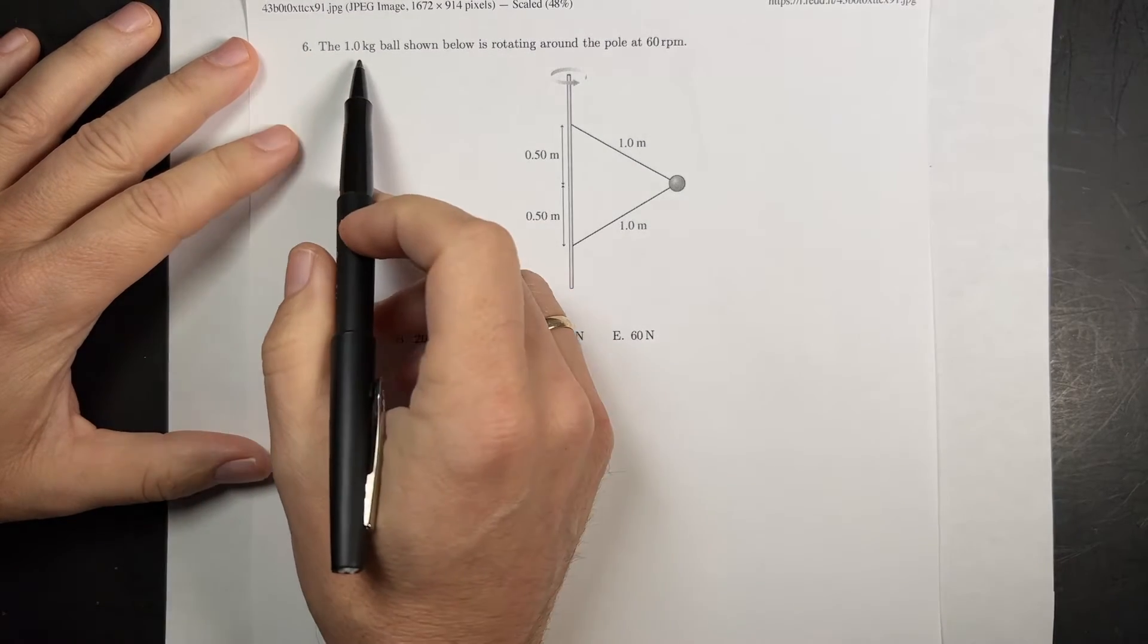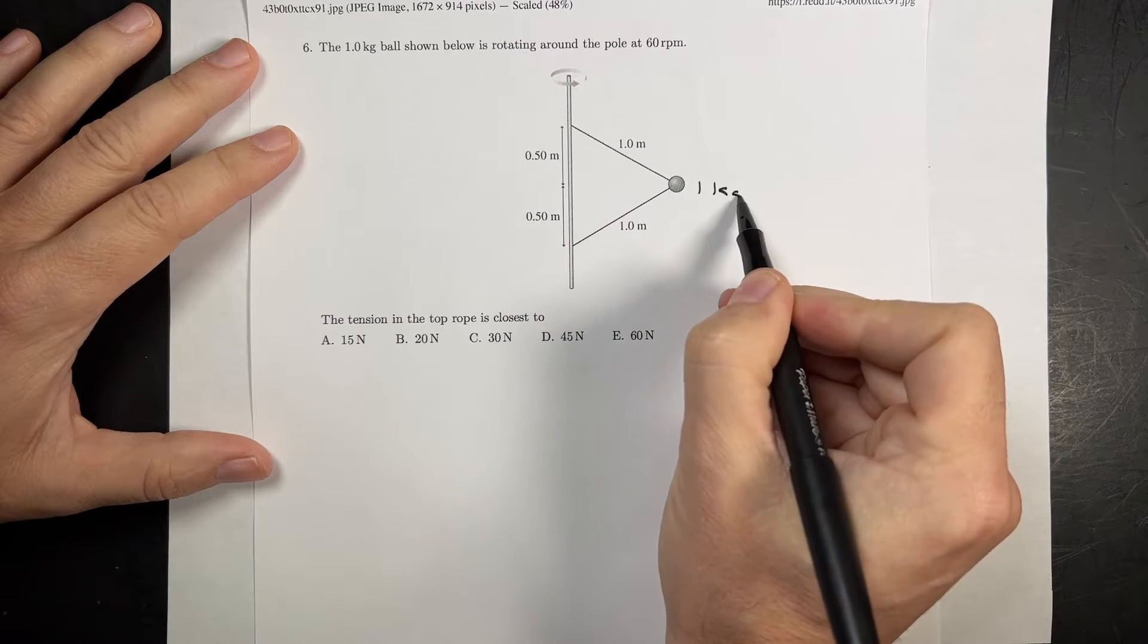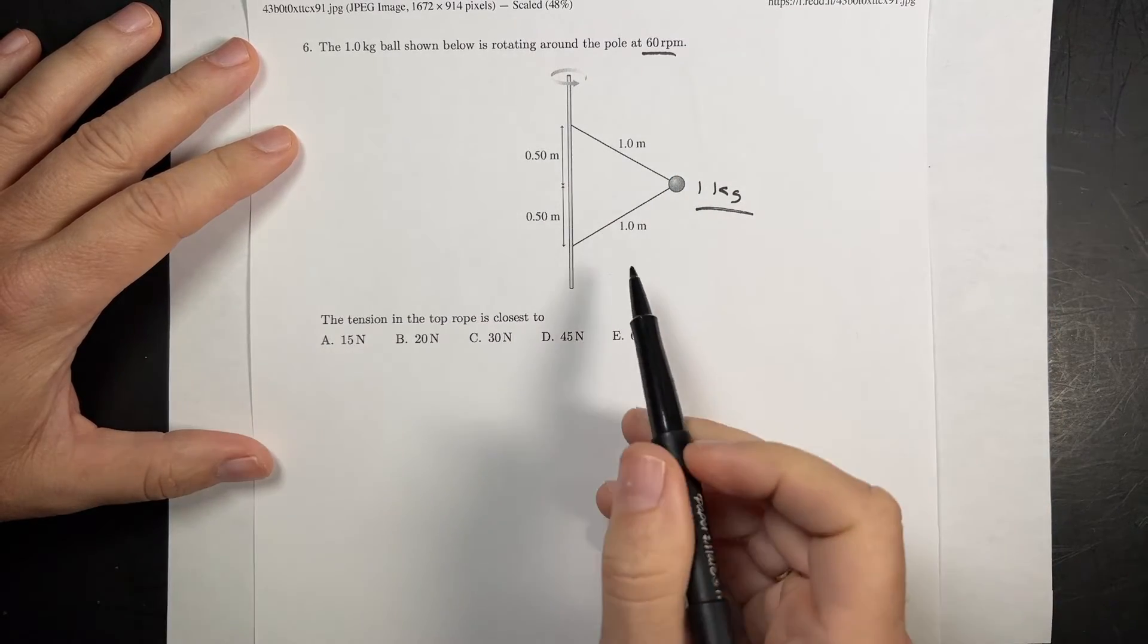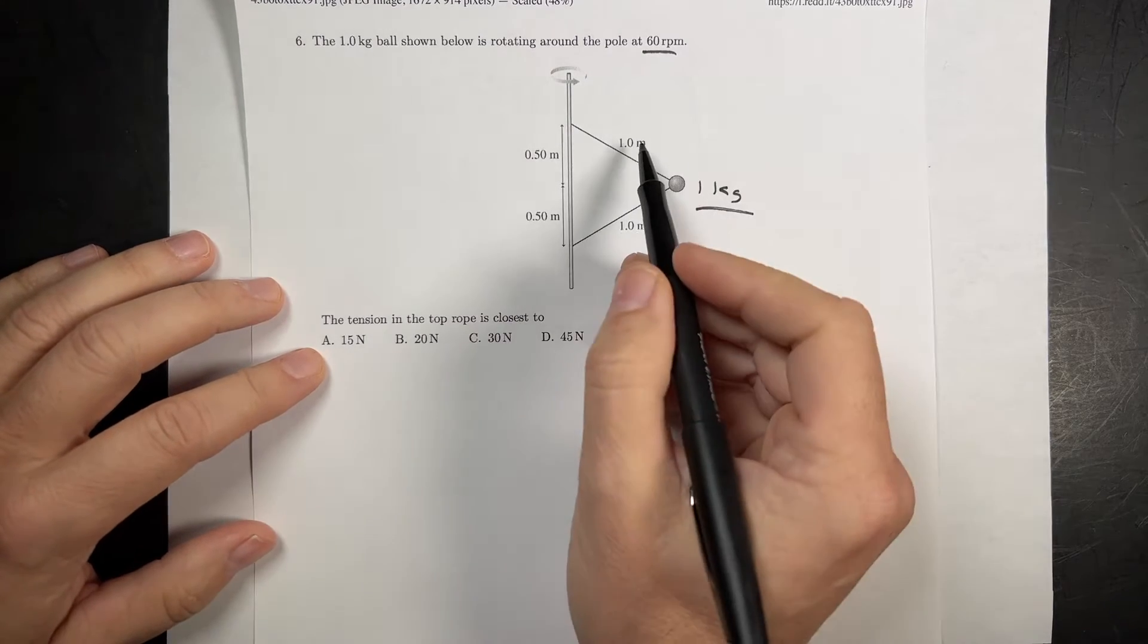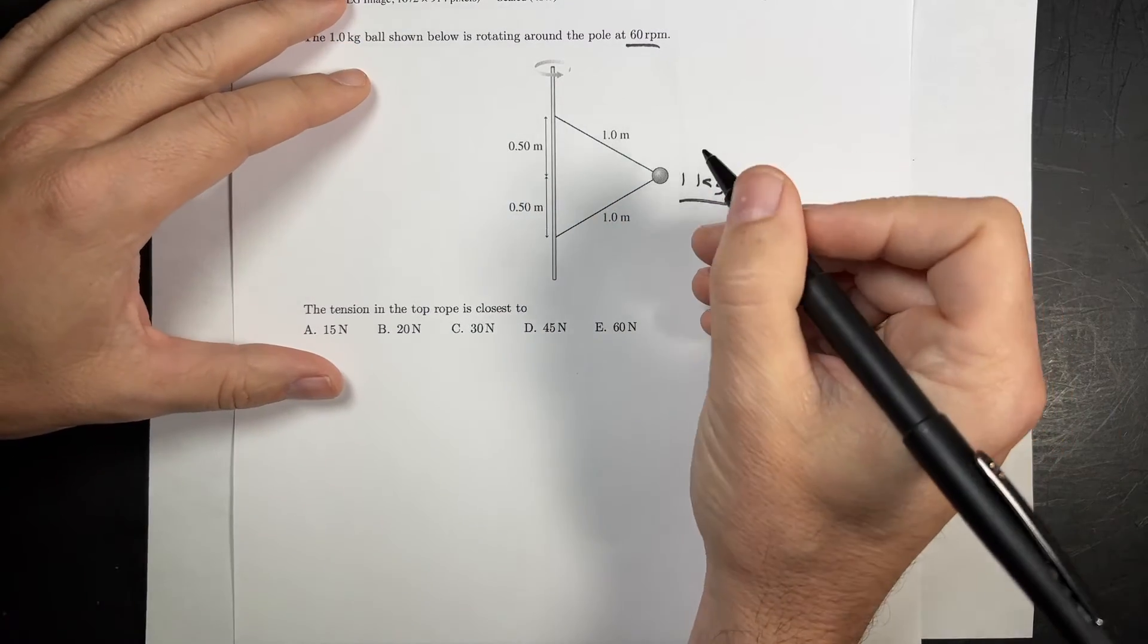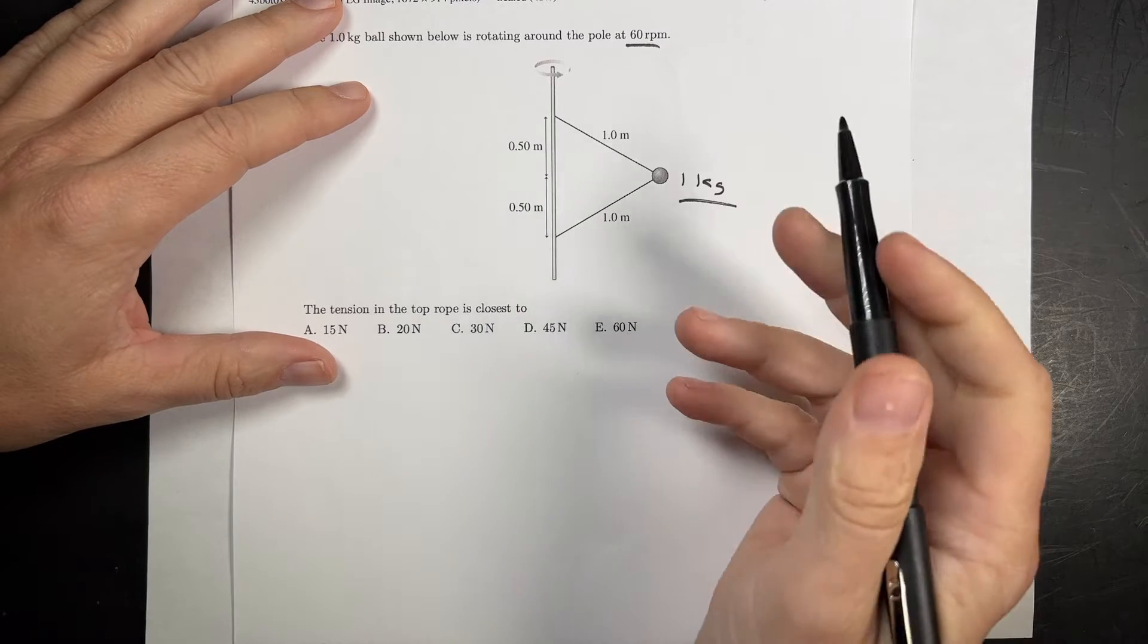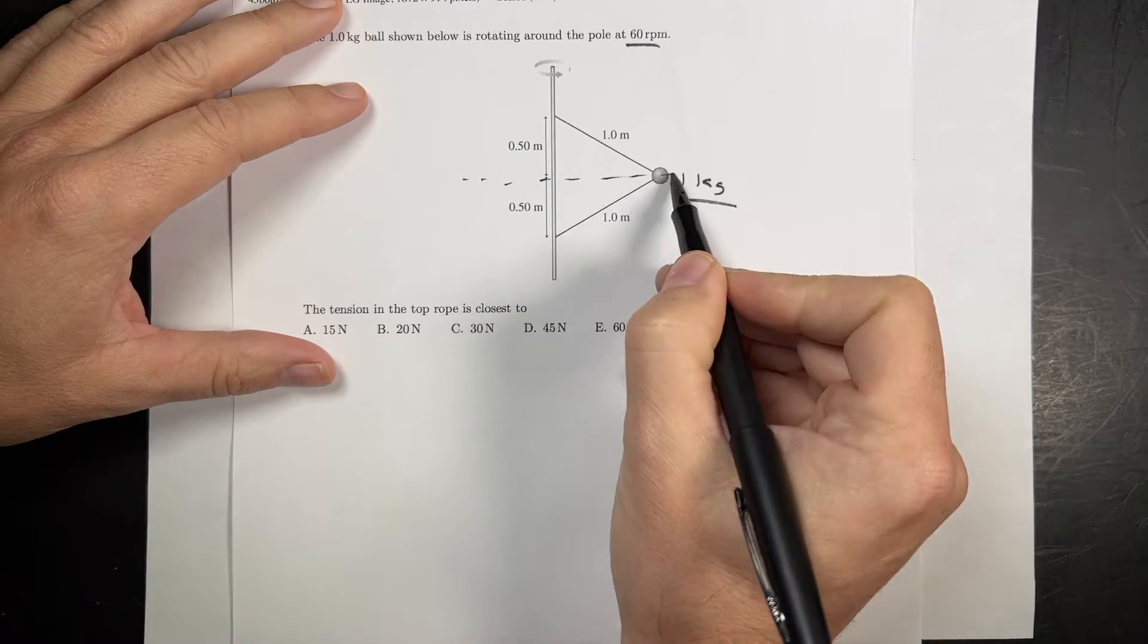So I'm going to solve this problem. Let's just look at it. It says the one kilogram ball is shown below rotating around the pole at 60 RPM. So it's going around this way. And I think these are both just strings. The tension in the top rope is closest to... okay. So there's a bunch of stuff going on here that makes this more complicated than it needs to be, but that's fine.